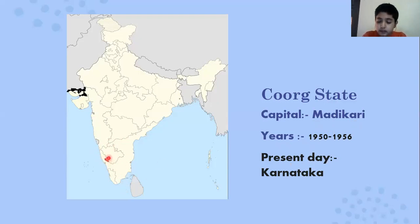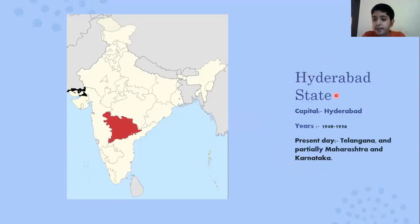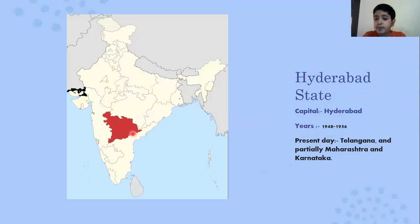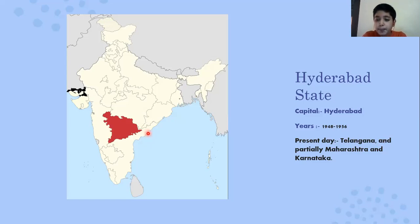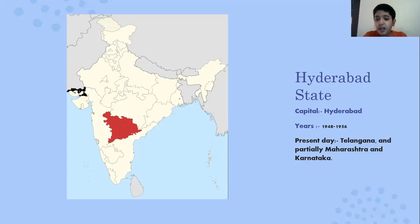Next is Hyderabad State. The capital was Hyderabad and it existed from 1948 to 1956. Present day it covers Telangana and partially Maharashtra and Karnataka. Previously there was no state known as Telangana — it was part of Andhra Pradesh, partially Maharashtra, and Karnataka. Today it is Telangana and partially Maharashtra and Karnataka.